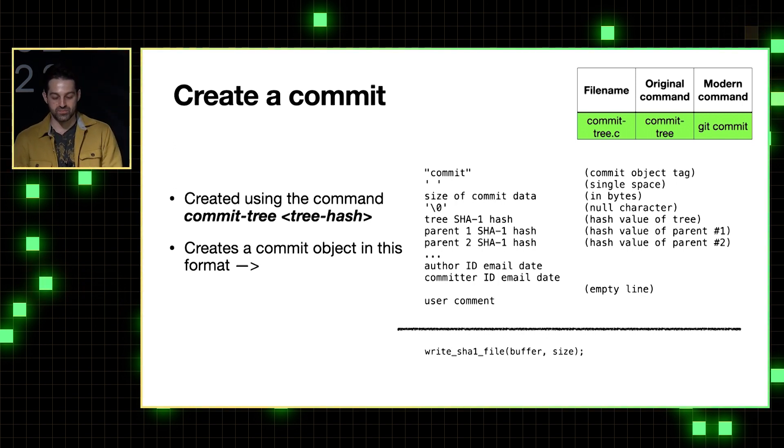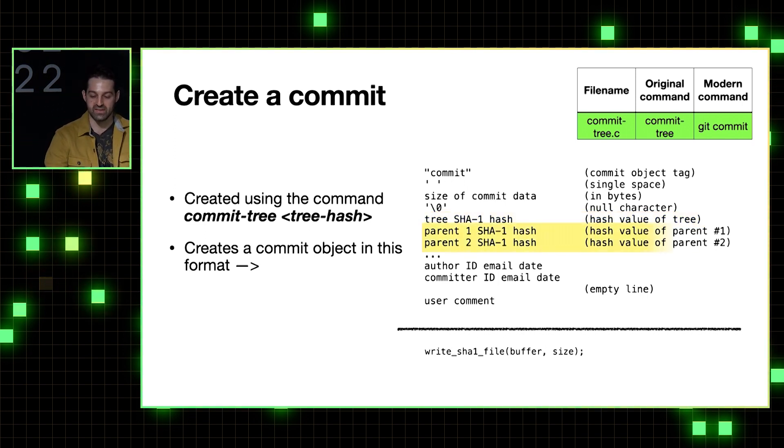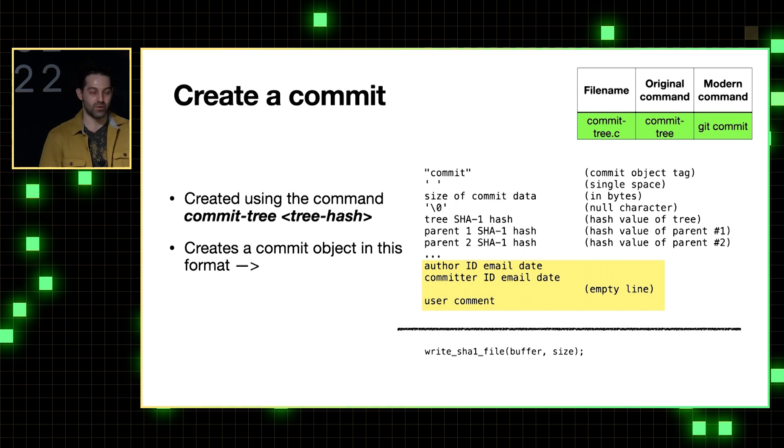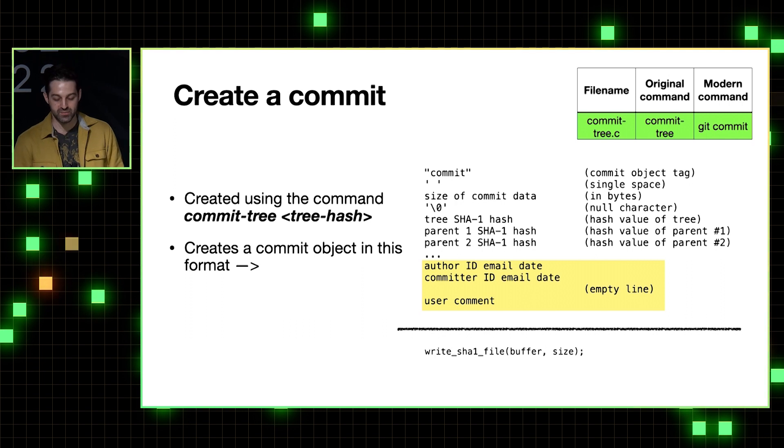And that just builds up a commit in the format that you see here on the right, starting with the object's type and the size of the commit, followed by the hash of the tree that's being committed, and then an optional number of parent commit IDs. And these are important because it means that even in git's initial commit, primitive branching and merging were possible, even though it's a huge pain if you're actually trying to do it yourself. And then lastly, we have the commit stuff that we're all used to seeing, so the author and committer information and the commit message.